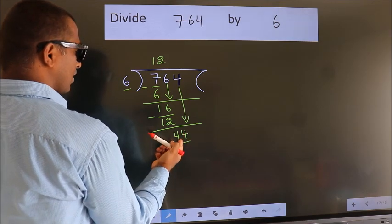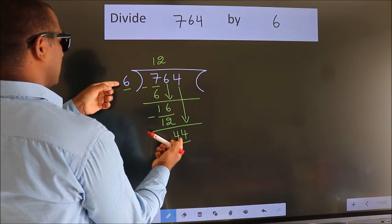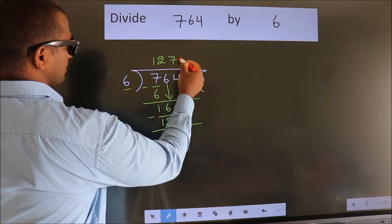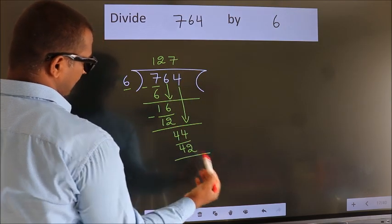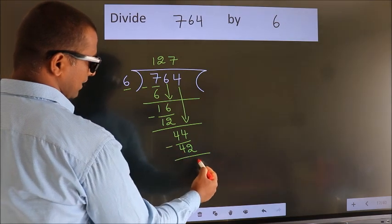A number close to 44 in the 6 table is 6 sevens, 42. Now we subtract. We get 2.